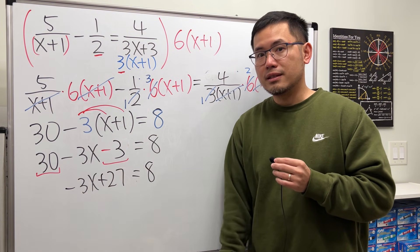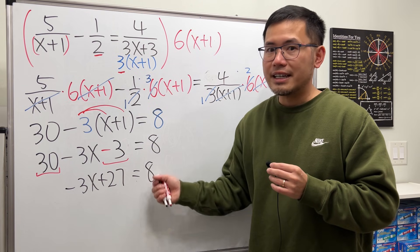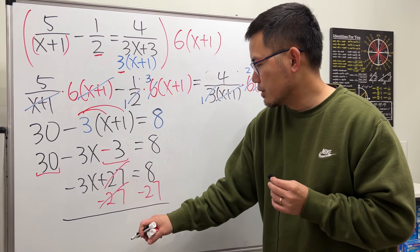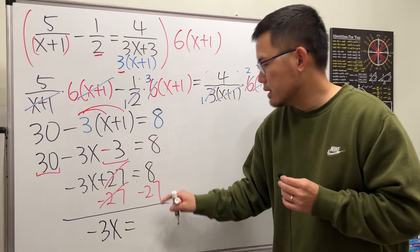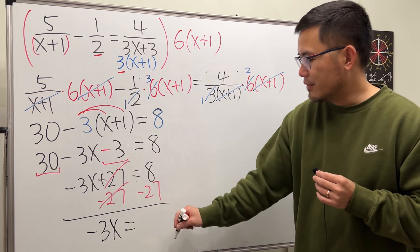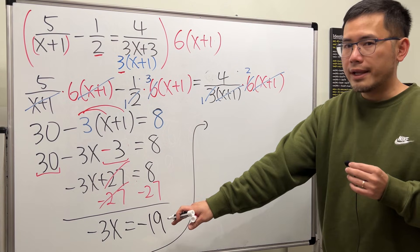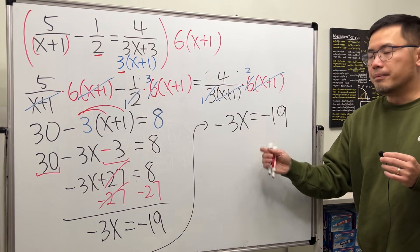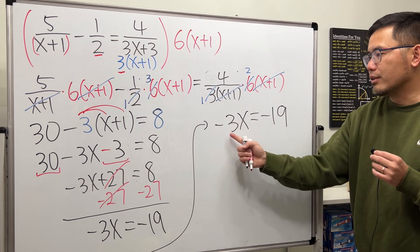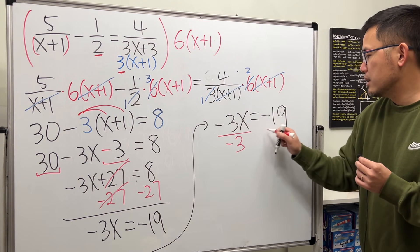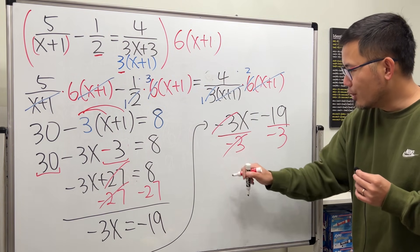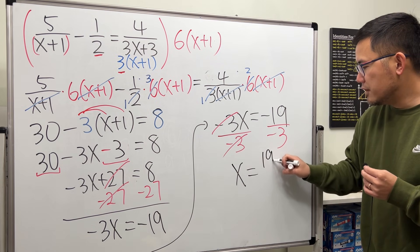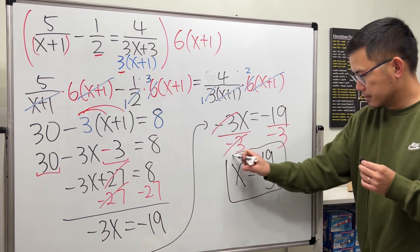Combining those terms: we have negative 3x plus 27 equals 8. Move the 27 to the other side by subtracting 27 from both sides, and we get negative 3x equals 8 minus 27, which is negative 19. So negative 3x equals negative 19. To get x by itself, divide both sides by negative 3 — negative divided by negative is positive — so x equals positive 19 over 3. It cannot be reduced, so the answer is 19 over 3.